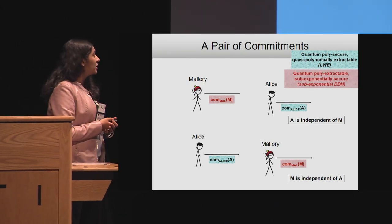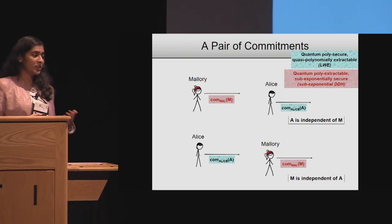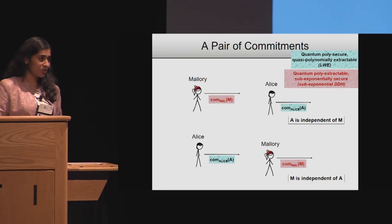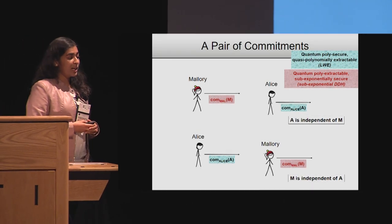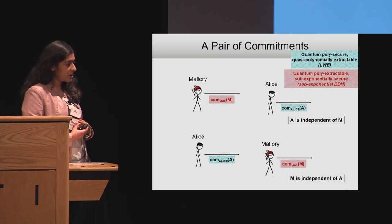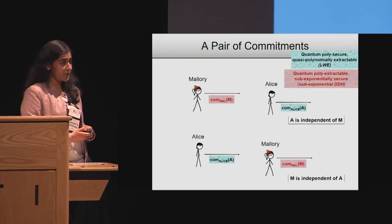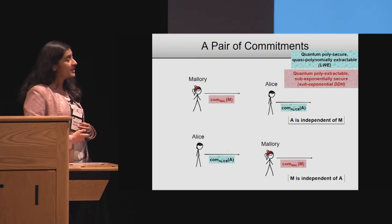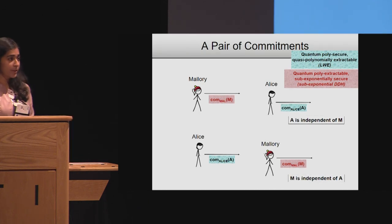Alice's commitment is based on quantum polynomially secure and quasi-polynomially extractable commitments. Mallory's commitment is quantum polynomially extractable but sub-exponentially classically secure. These are two commitments that differ across two different axes of hardness — one is harder than the other across one axis.